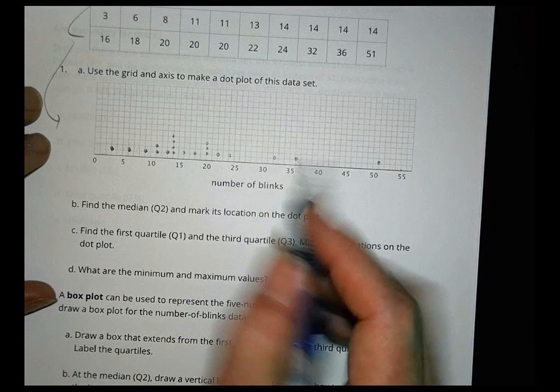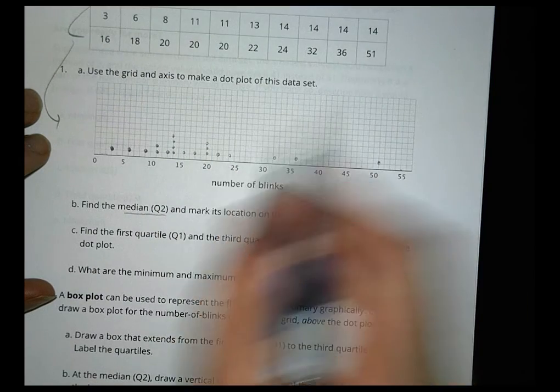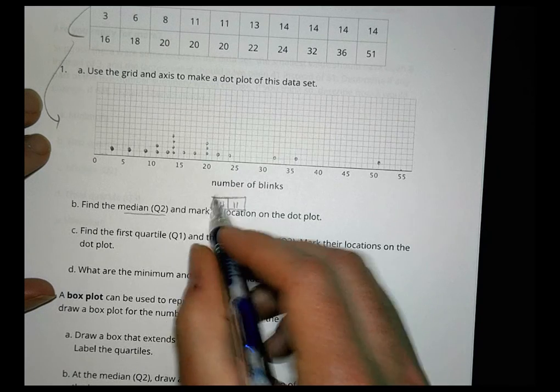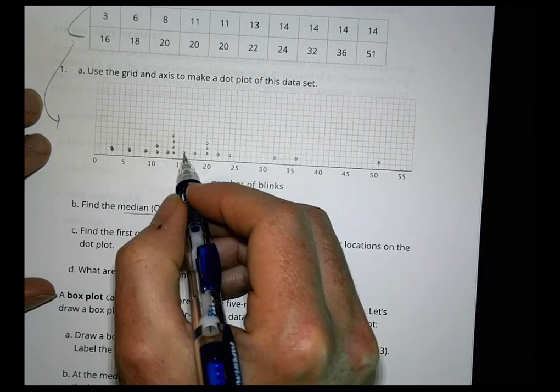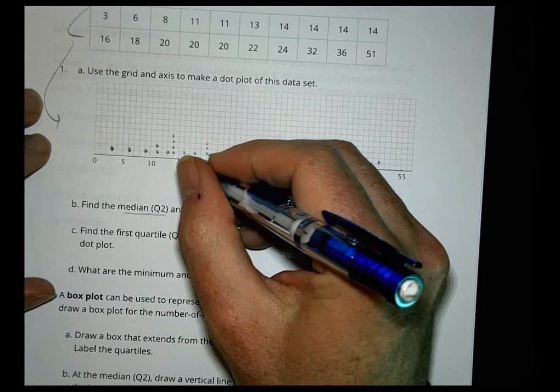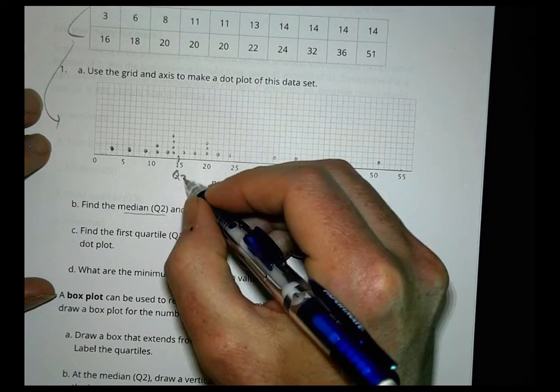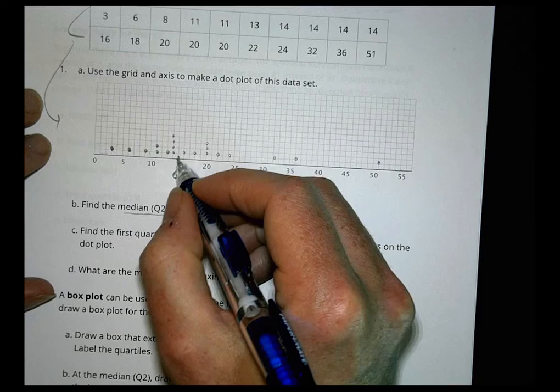And what they want us to do is first of all find the median and mark its location. Now there are twenty here, so we're going to find the place between numbers ten and eleven. Data points ten and eleven. So one, two, three, four, five, six, seven, eight, nine, ten, and there's eleven. So our quartile two is right here at fifteen.